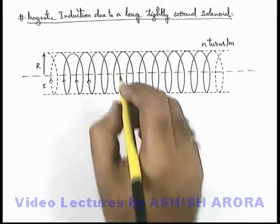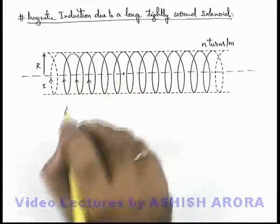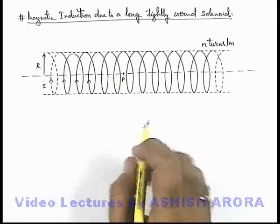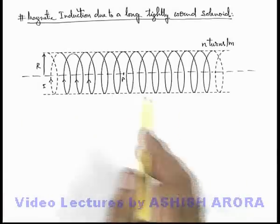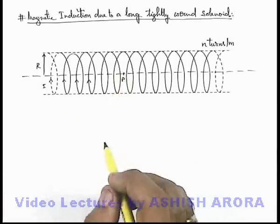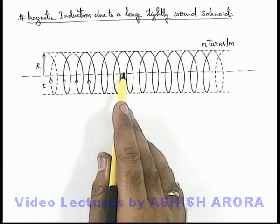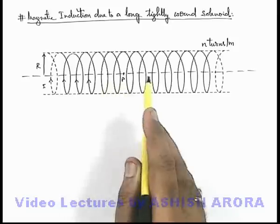And if we wish to find out the magnetic induction at any interior point, say this is point P. As the solenoid is very long, we can consider every point as the center of the solenoid. In this situation, at point P, to find out the magnetic induction due to the whole solenoid...